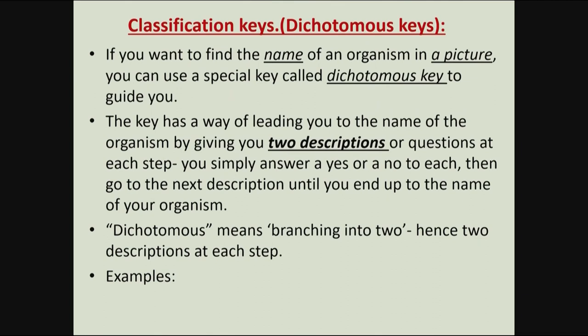The last topic is the classification key, or the dichotomous key. This is a special key designed to identify and name organisms from a picture. It has a set of questions, and at each step, these questions have two descriptions. You simply answer yes or no to each question, then move to the next step, until you finally reach the name of that particular organism. Dichotomous means branching into two — so in each step we have two descriptions.